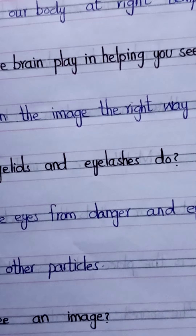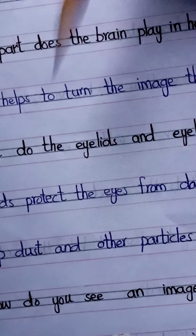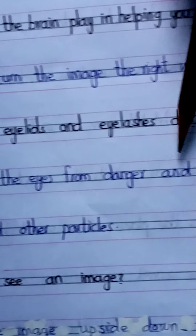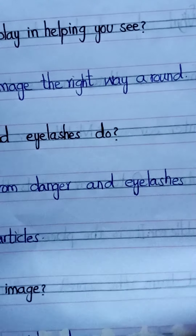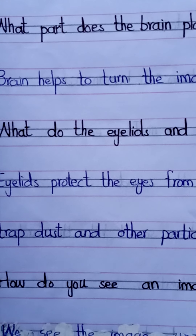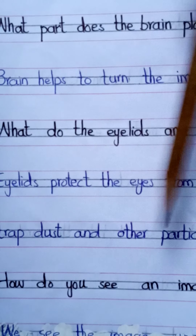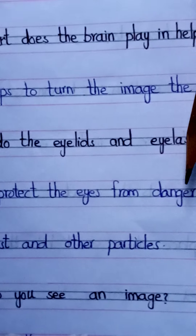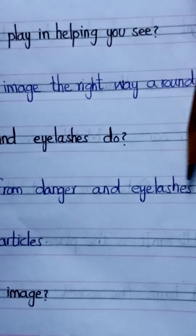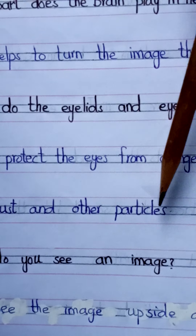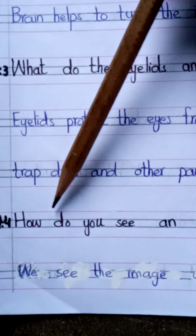Question number three: What do the eyelids and eyelashes do? Eyelids protect the eyes from danger, and eyelashes trap dust and other particles.